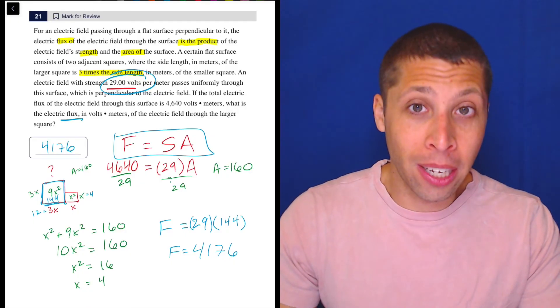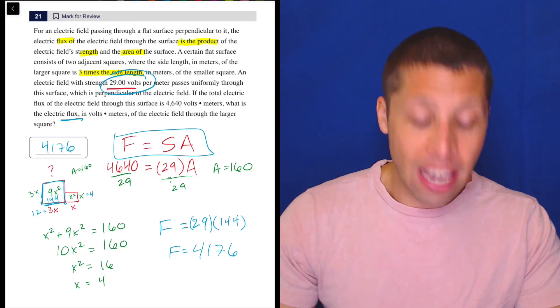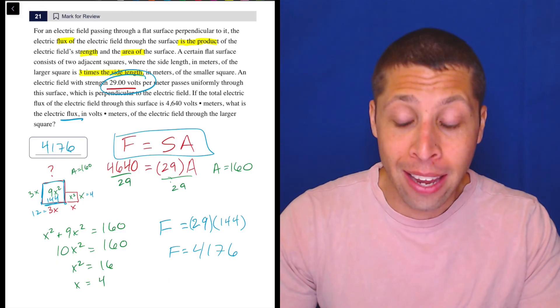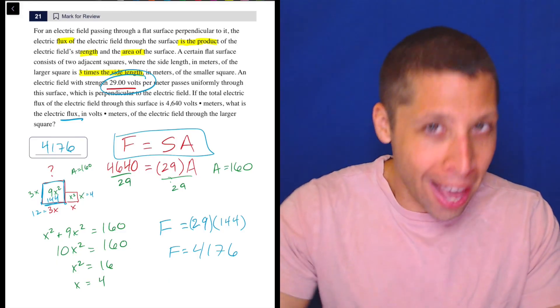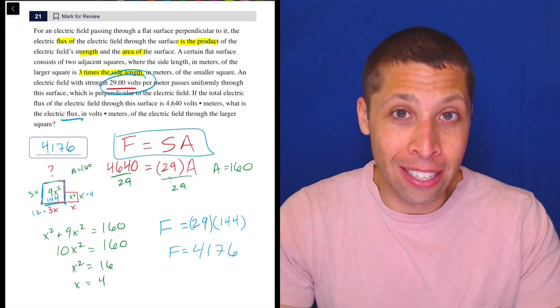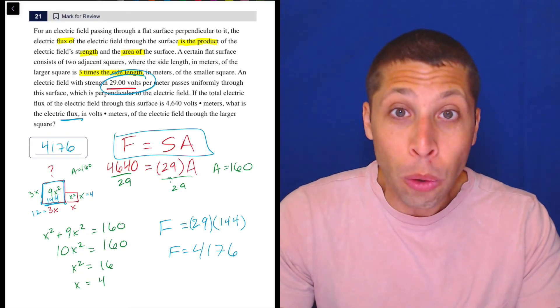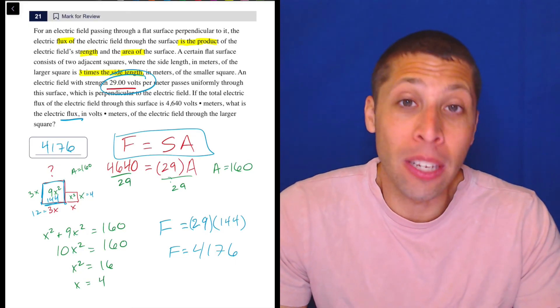They gave me a formula, F equals SA. They gave me two numbers for that formula. Let me solve for the third because I can. And because you can is a really good reason to do a lot of stuff on some of these hard, twisted questions. It's just like, do what makes sense given the information you have.